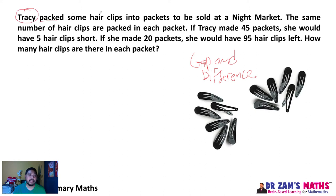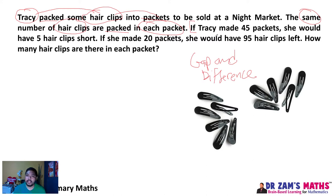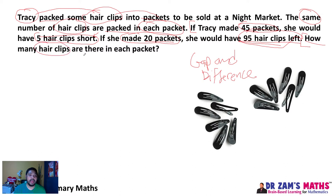Let's read the problem sum using the GWS method with Dr. Zam's keys checklist. Tracy packed some hair clips into packets to be sold at the night market. The same number of hair clips are packed in each packet. If Tracy made 45 packets, she would have 5 hair clips short. If she made 20 packets, she would have 95 hair clips left. The question is: how many hair clips are there in each packet?